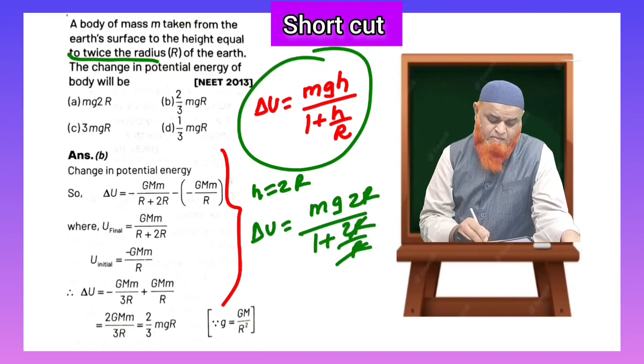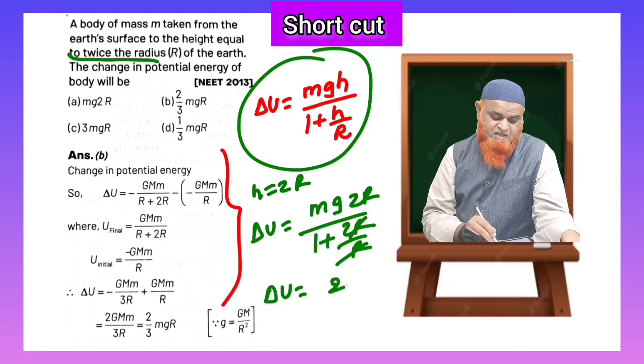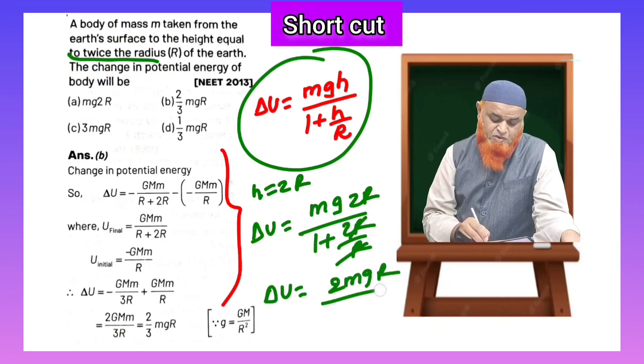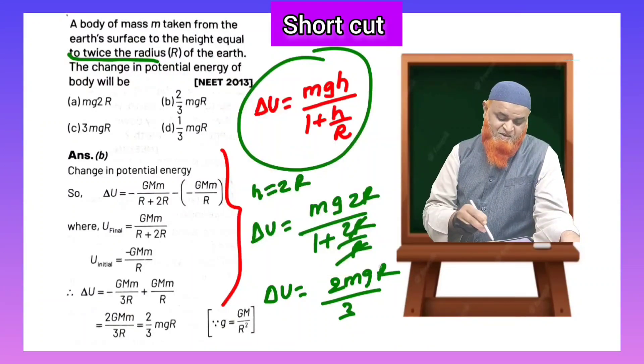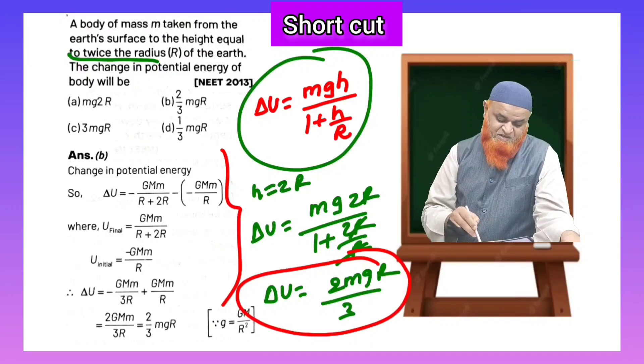By 1 plus 2r by r. R gets cancelled here, so delta U is equal to 2mgr by 3. That's it, you can compare the answers here. Now you can just see the method, this is 2 by 3 mgr.